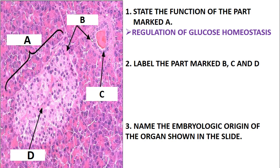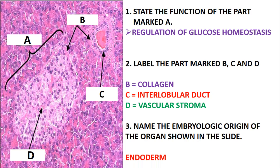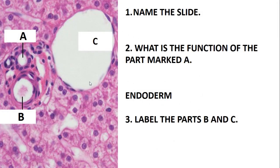Now for the parts marked B, C, and D: B is just collagen. C is just the interlobular duct. D — some people might make a mistake and say D is the islets of Langerhans, but no, D is a part within the islets of Langerhans; D is simply the vascular stroma. The embryonic origin of this organ — the pancreas — is the endoderm.